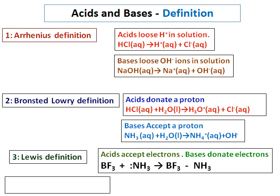So ammonia is called a Lewis base and BF₃ is called a Lewis acid. To remember what donates and what accepts: acid accepts electrons — A, A — all vowels. Remember one and you can derive the definition for base automatically.